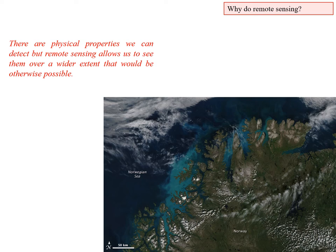Remote sensing also allows us to see properties over a wider extent. This image shows plankton on the northern coast of Norway — that cyan, blue-green color near the coasts. You could go out and do sampling, but remote sensing gives you coverage over a much larger area.